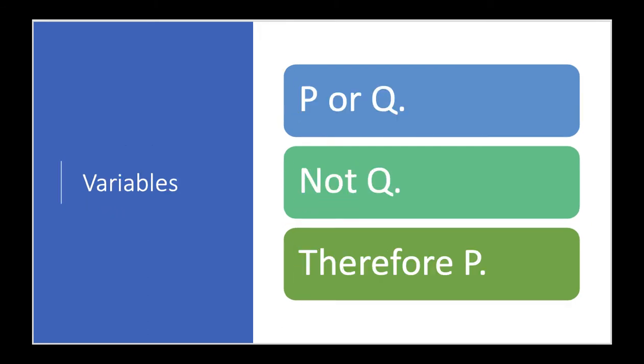If we look at the very first example, we could represent each statement with a variable. If we think of the letter P as standing for the statement, it will rain tomorrow, and Q as standing for the statement, it will snow tomorrow, our argument takes on the form P or Q, not Q, therefore P.